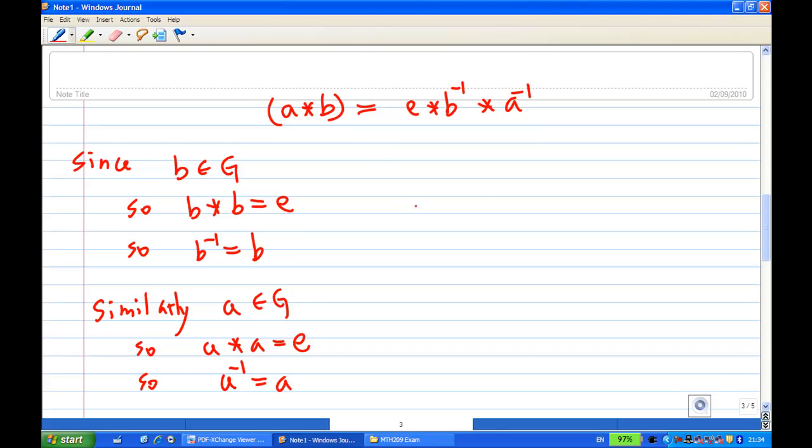So putting this together, we have e times b inverse. Because b inverse is b, a inverse is a. So e times b is b. And then in the end, you get b times a. So we conclude that a times b is equal to b times a. So the group G is Abelian.